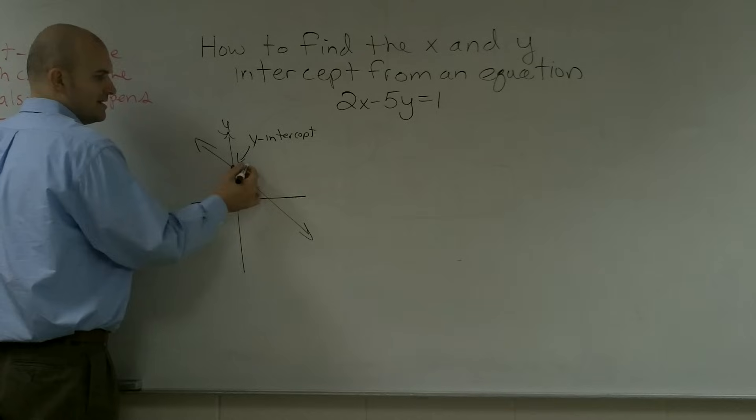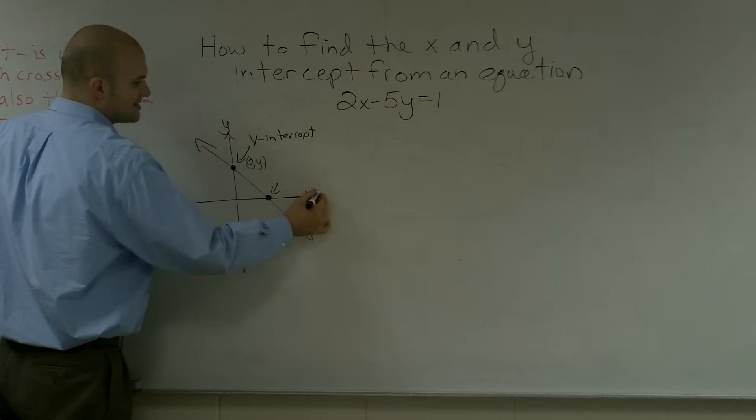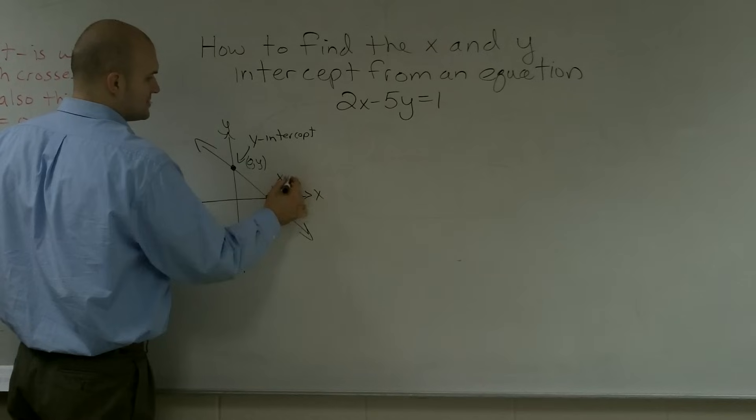We know that it's going to be at some point (0, y). And our x-intercept is where it crosses the x-axis, at some point (x, 0). That's what we call the x-intercept.